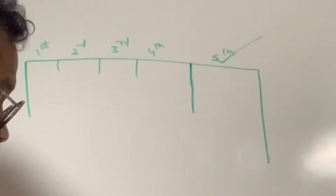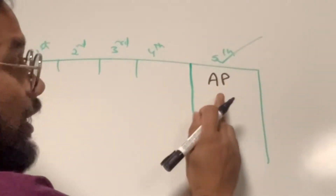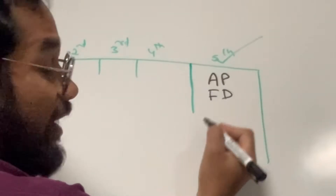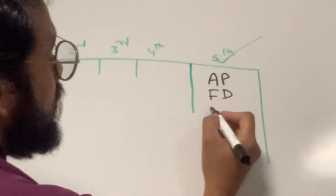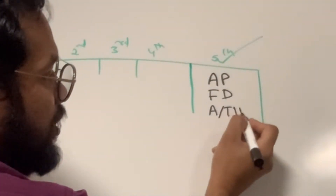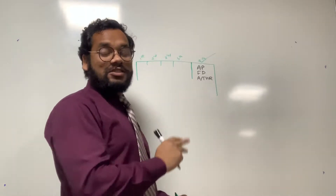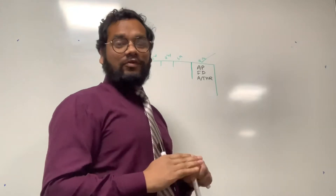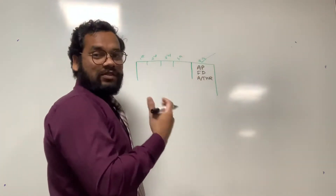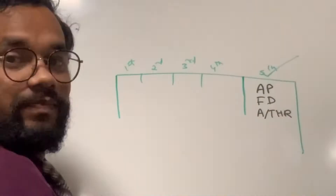In this 5th column, we get the status of autopilot (AP), flight director system (FD), and autothrust (A/THR). So we get the status of these 3 systems in the 5th column of FMAs.